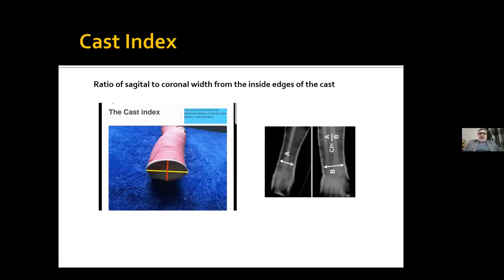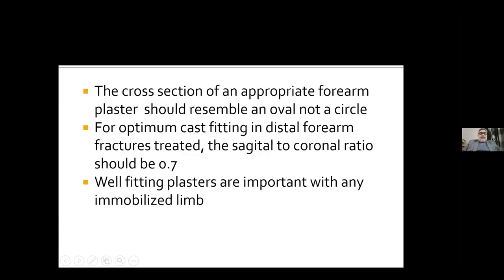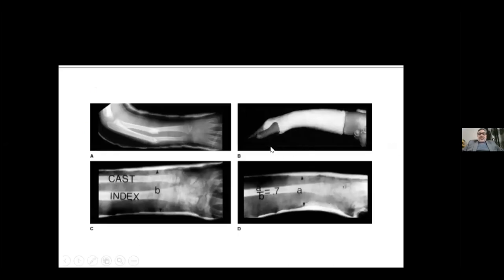Cast index: this is the ratio of sagittal to coronal width from inside the cast edges. A is the dimension in the lateral view, B is in the AP view. Cast index is A divided by B. The cross-section of an appropriate forearm plaster should resemble an oval and not a circle. For optimum cast fitting in distal forearm fractures, the sagittal-to-coronal ratio should be 0.7. For the leg it is 1.2, for the arm it is 1.3 — it is not the same everywhere. Well-fitting plasters are important with any immobilized limb. If the forearm cast looks round, it means you have not molded it properly and you are going to lose your reduction.